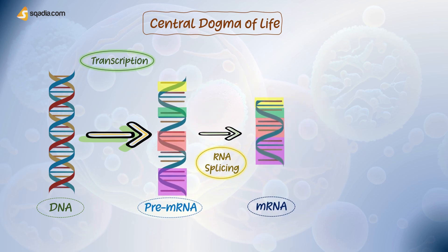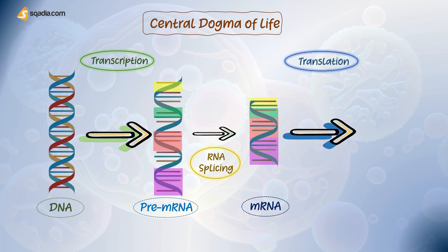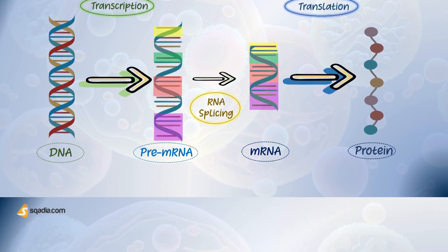After splicing, this understandable form of genes — that is, messenger RNA — is then translated via the process of translation, from the sequence of genes to the sequence of respective amino acids, thus giving rise to specific proteins. This central dogma of life is applicable to all genetic makeup of the body, and that's what is going to happen with the TCRs as well.